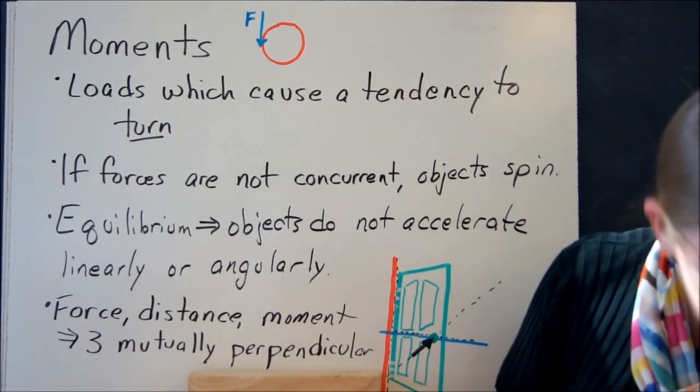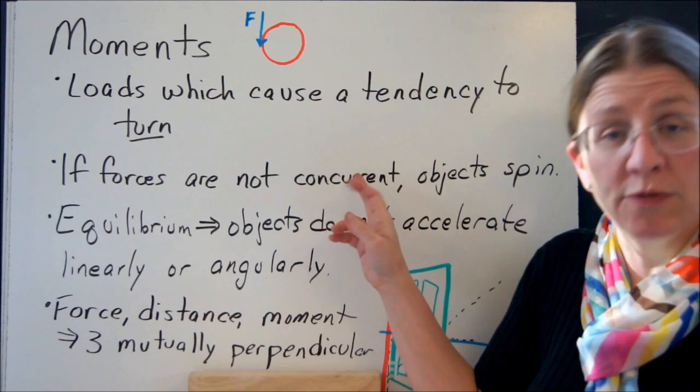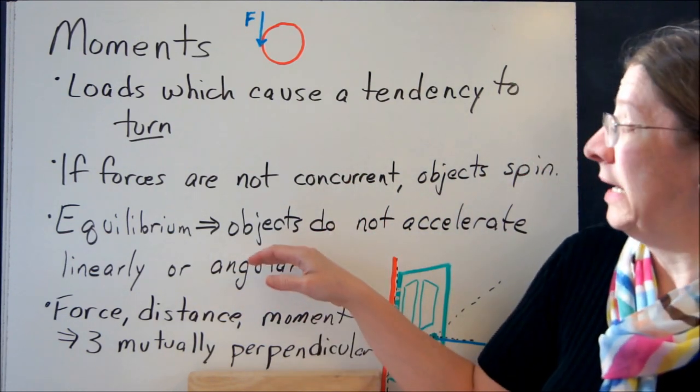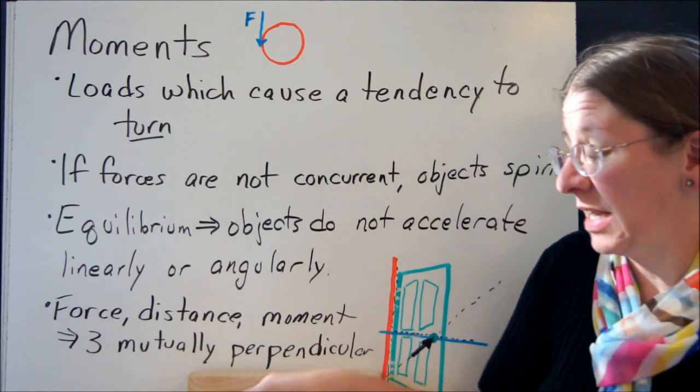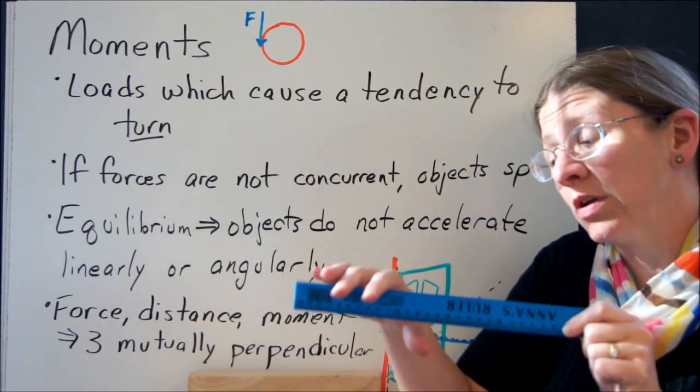For example, moving along. If the forces are not concurrent, objects are going to spin. Equilibrium tells us that objects, any object that is in equilibrium, is neither going to accelerate linearly nor spin.